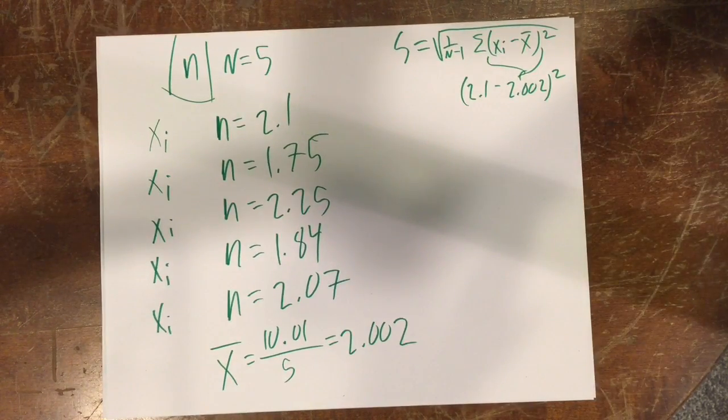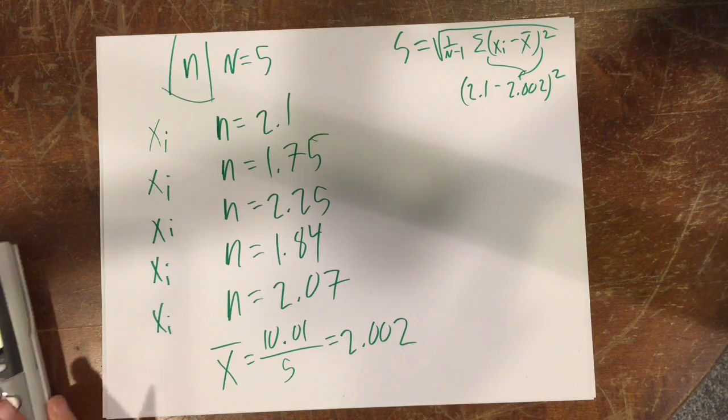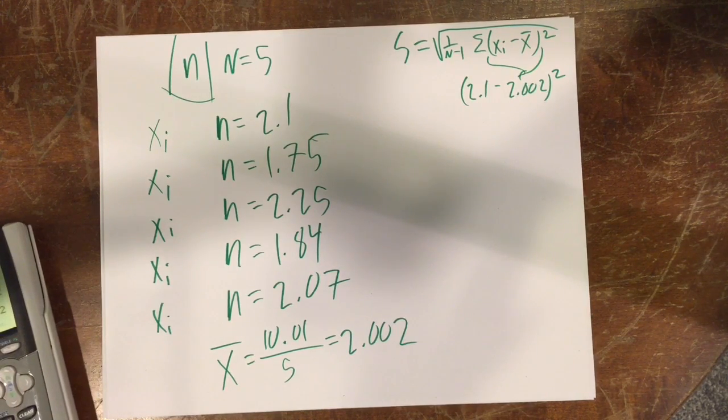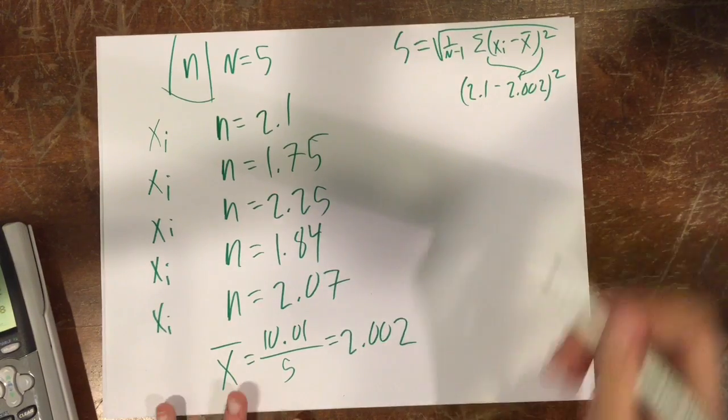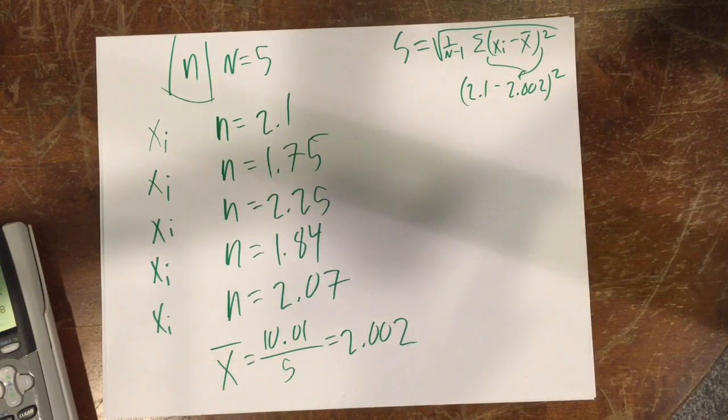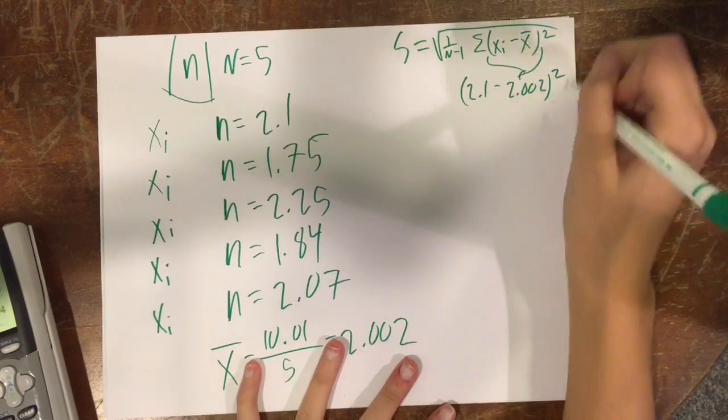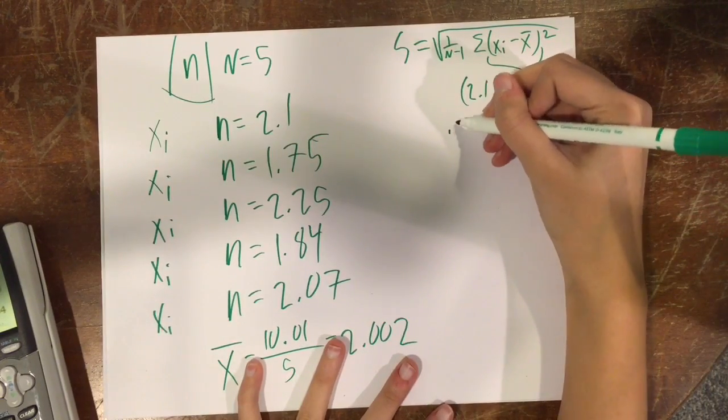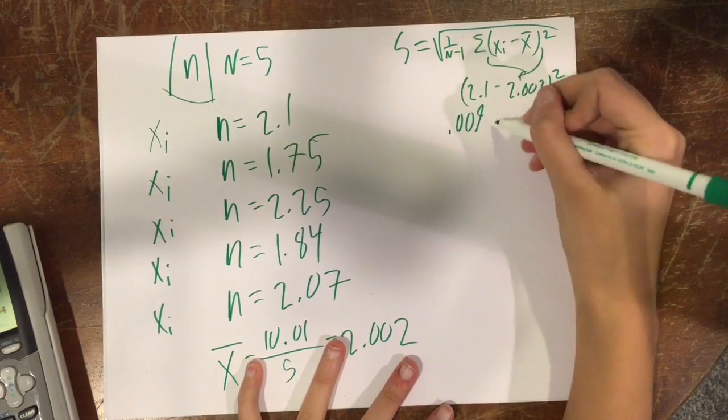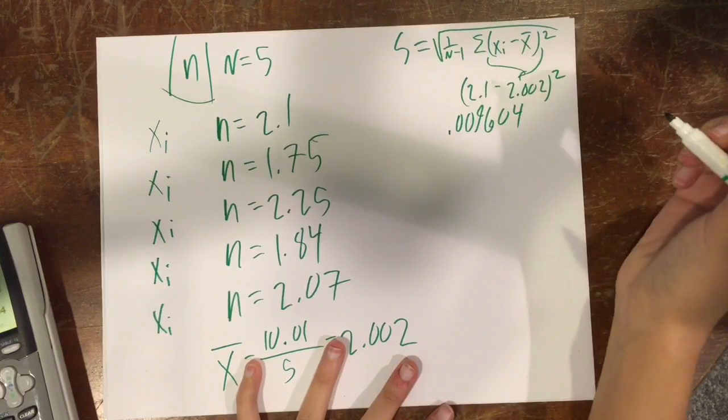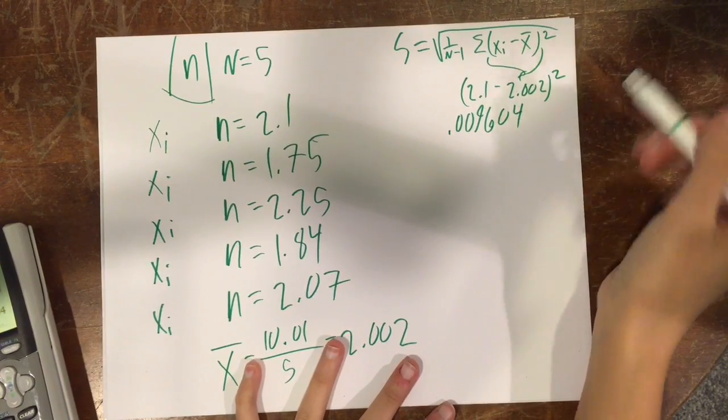So this is called math. It's very simple. We've been doing this type of math, well, okay, not the squaring, but we've been doing this type of math for a while now. And this number comes out to 0.009604, once you're all done with it.